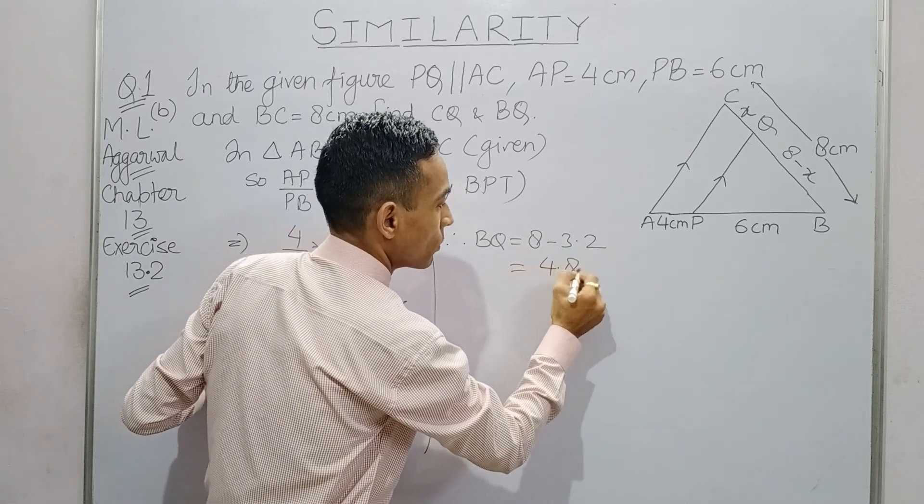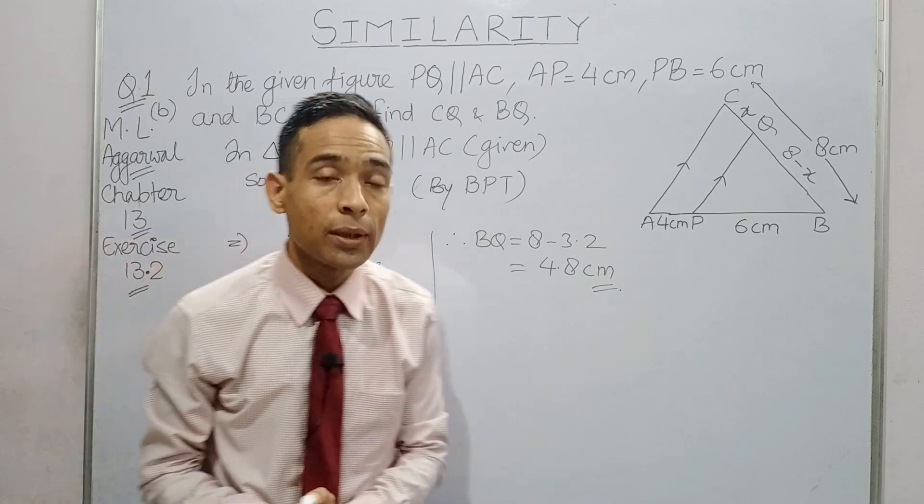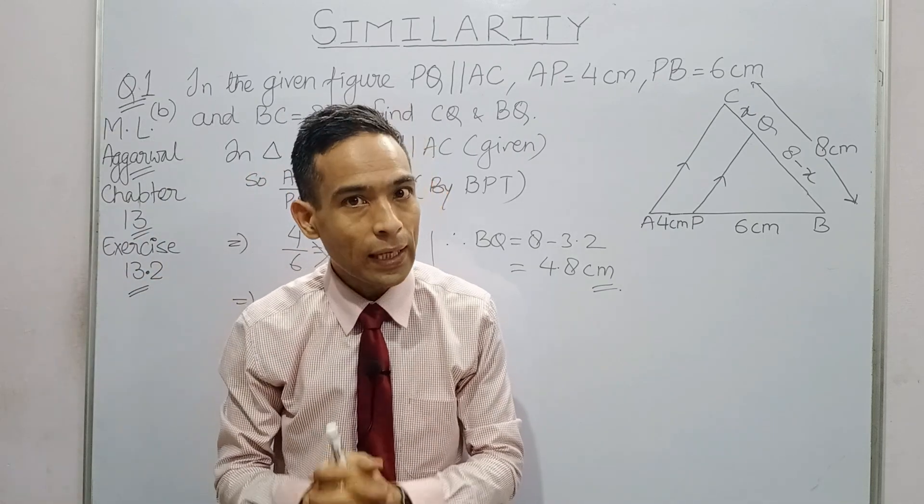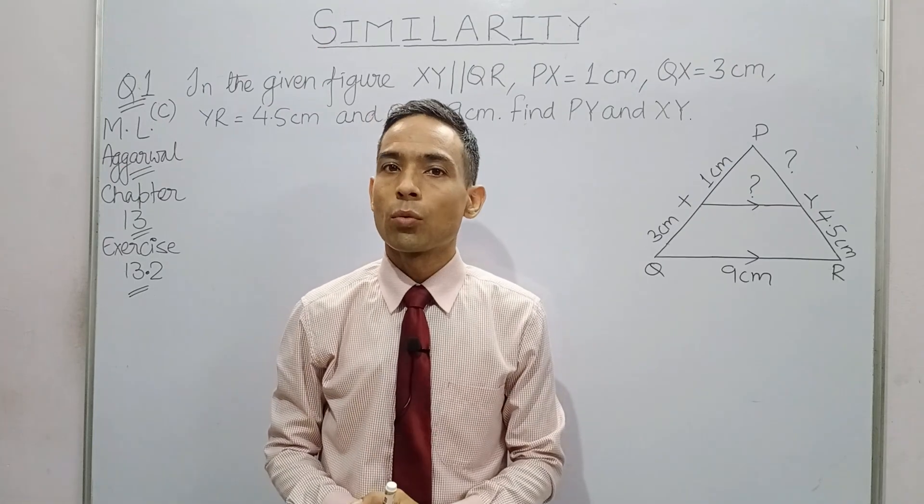Therefore BQ is 8 minus 3.2, and this will give 4.8 cm. So CQ is 3.2 cm and BQ is 4.8 cm.